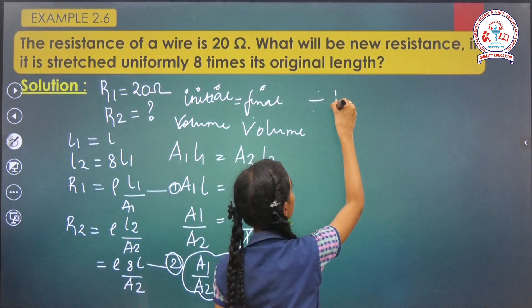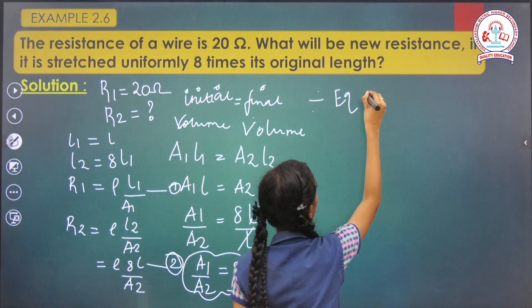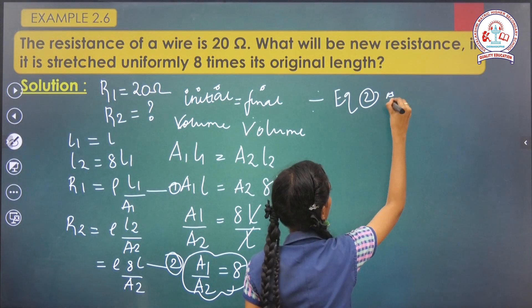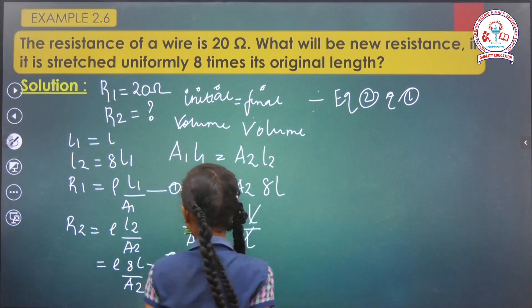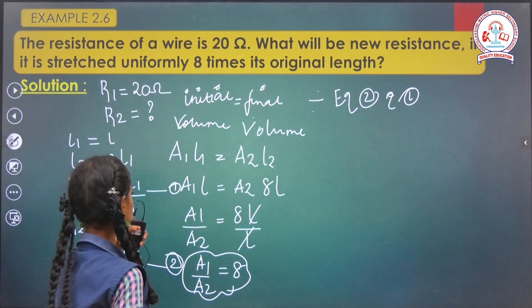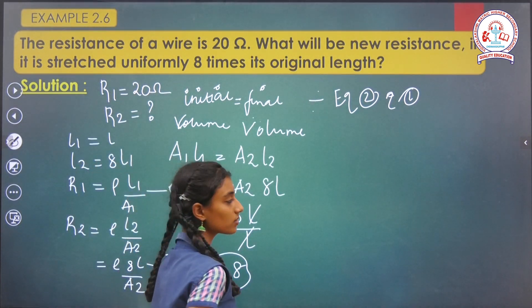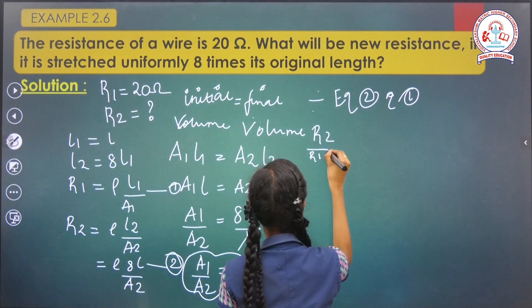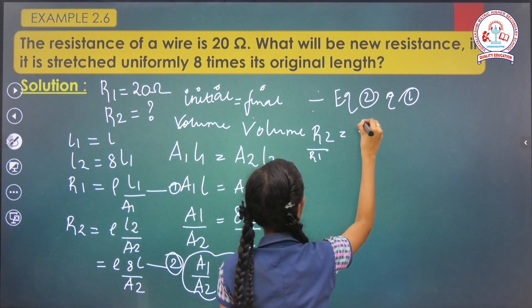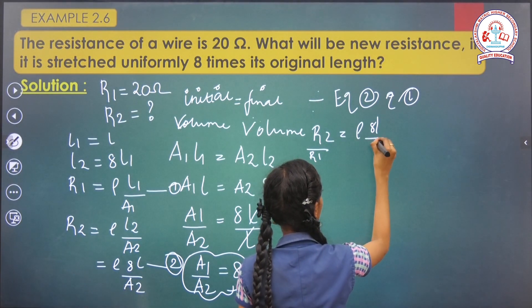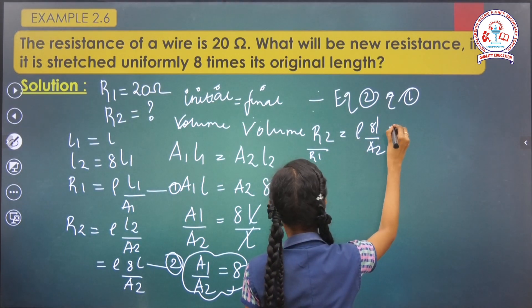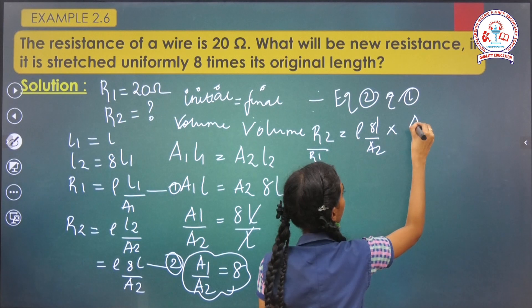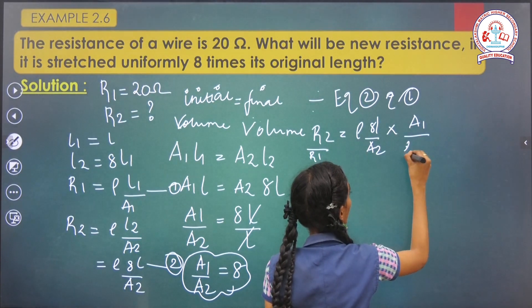Divide equation 2 and 1. This is the second equation and this is the first equation. We should divide this. R2 by R1 equals ρ·8L by A2 into A1 by ρL.